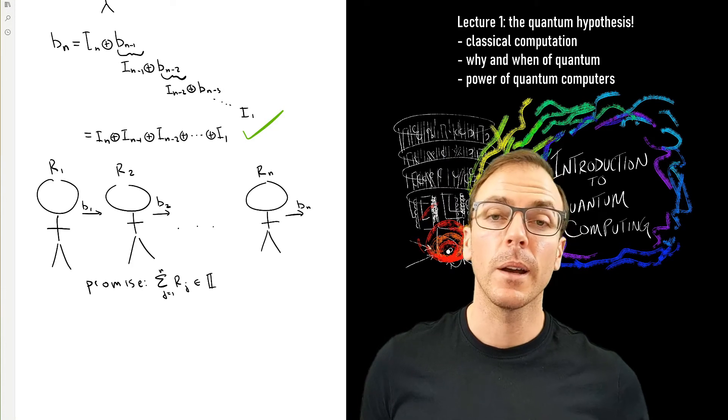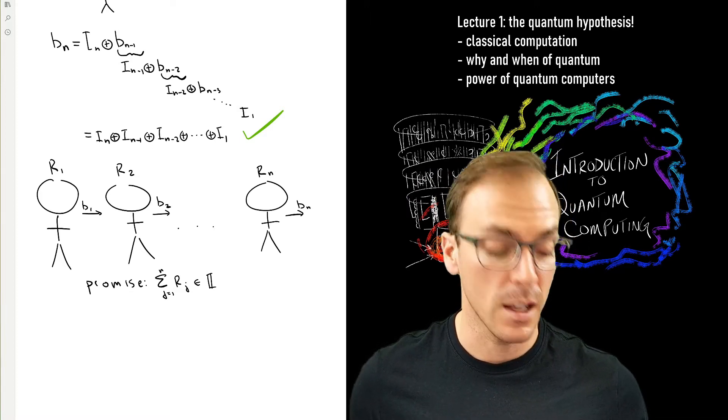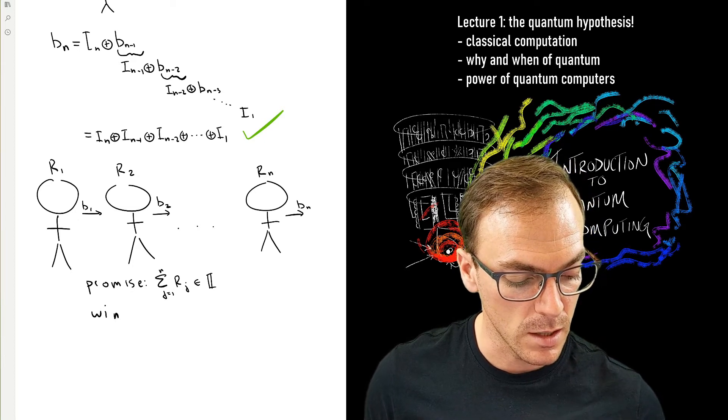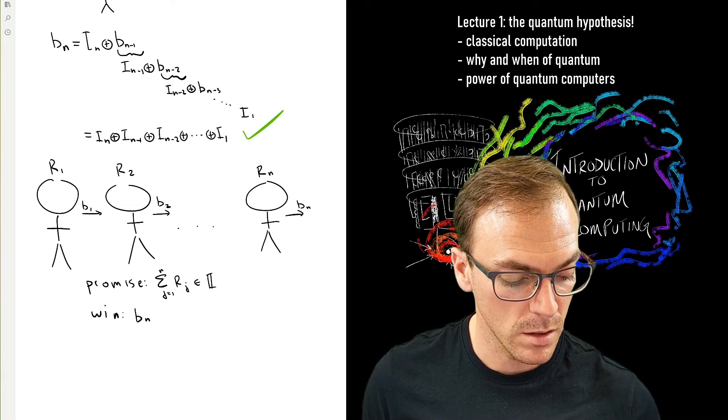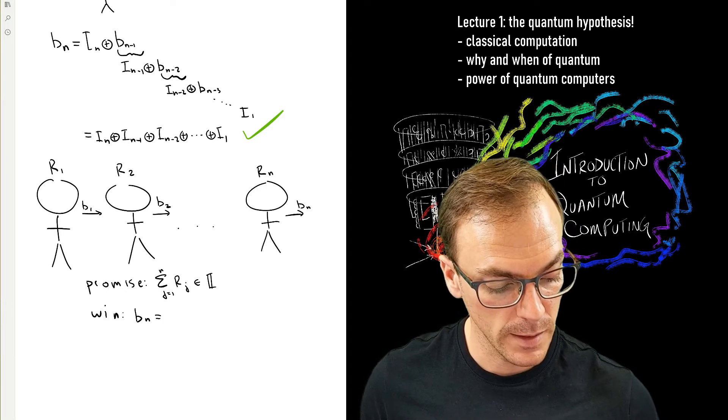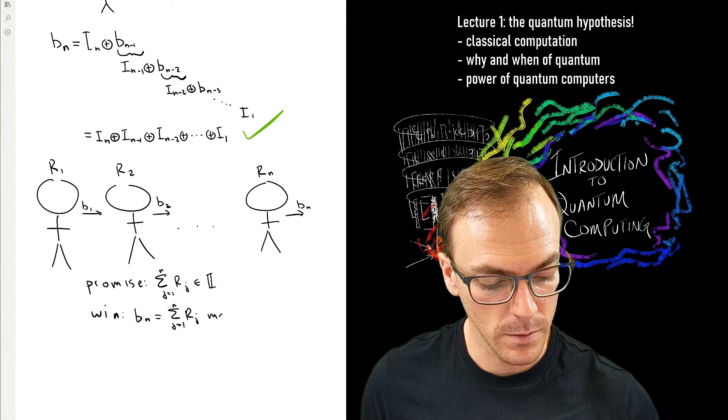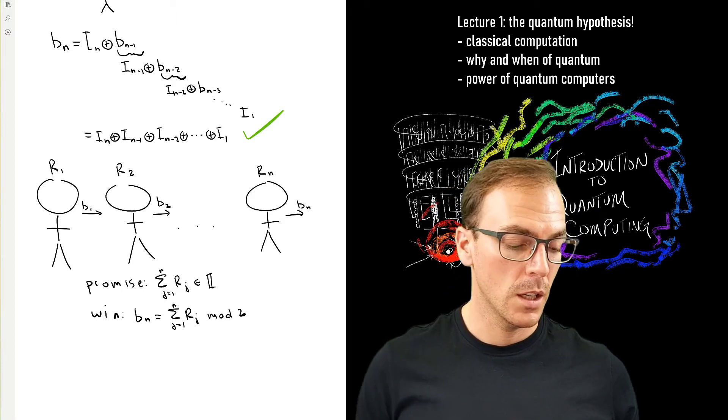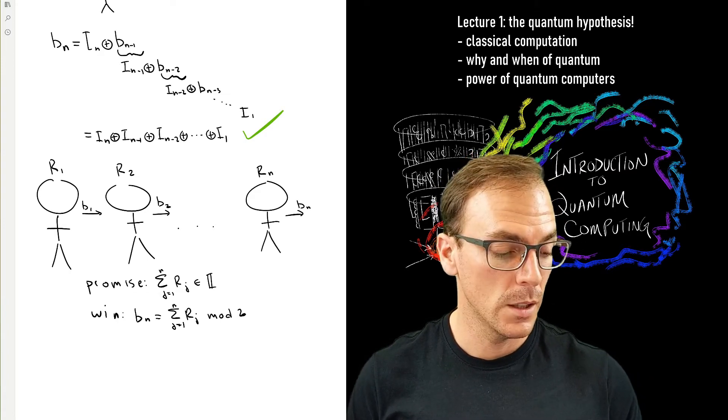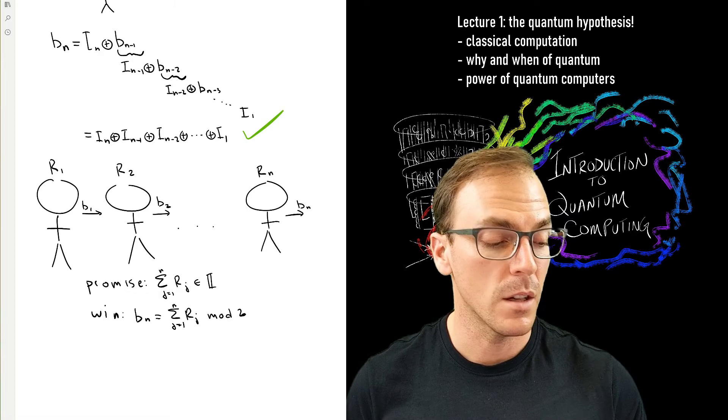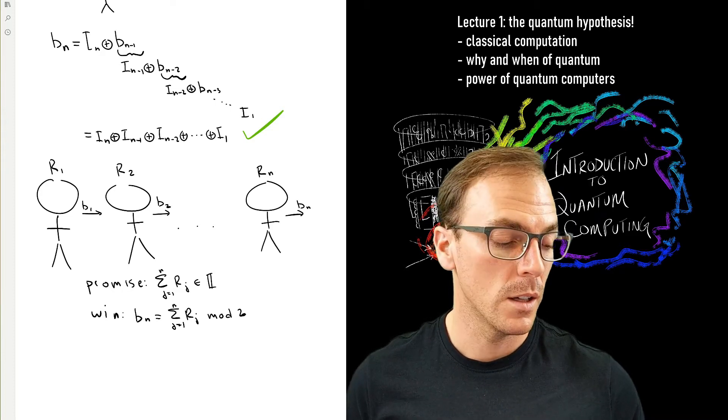But under this constraint that each player can only provide a bit of information to the next player, we see almost immediately that they can't solve the problem. The win condition hasn't changed. It's that they win when the last player's bit is the sum of all these numbers mod 2, so their bit is 1 if it's odd and 0 if it's even. And this is not possible. So almost immediately, the first player is given a real number. Maybe they're given the number pi, but they have to report to the next player 0 or 1. So this is impossible.